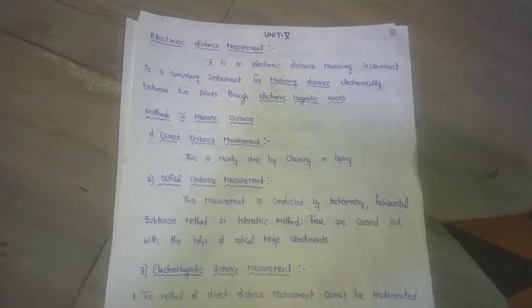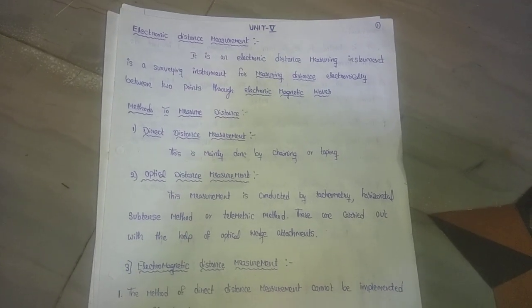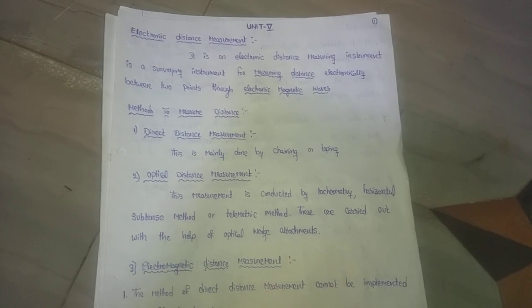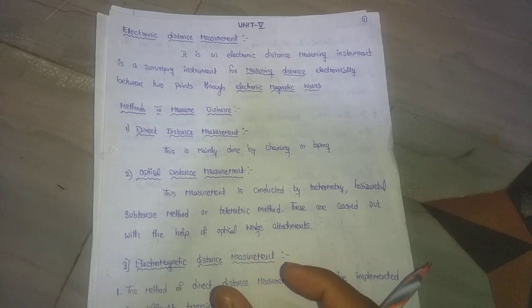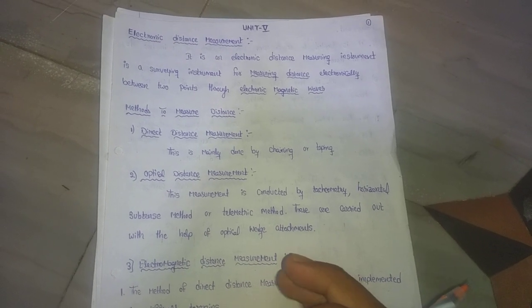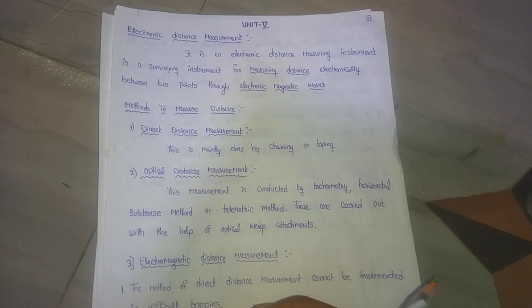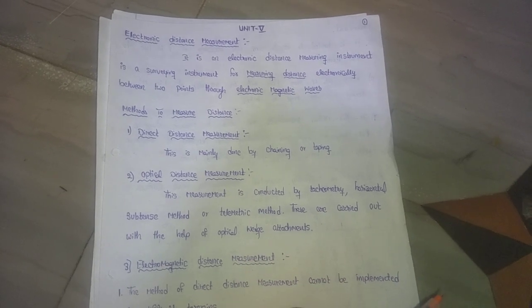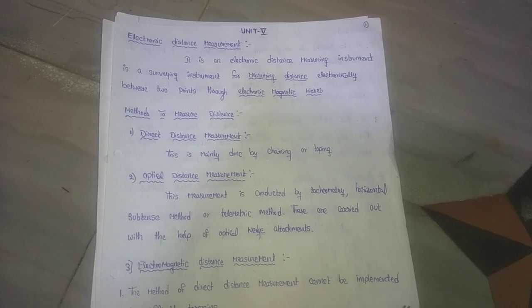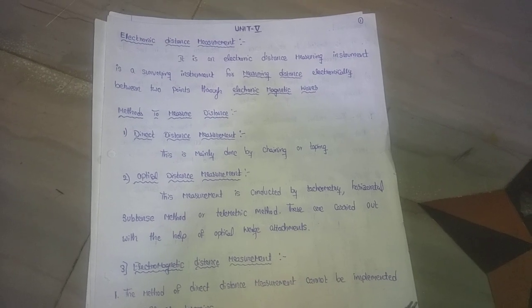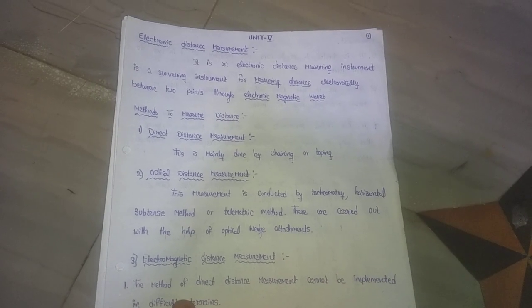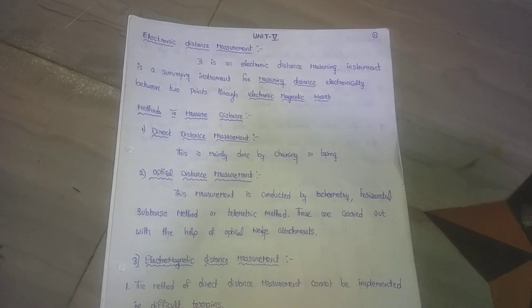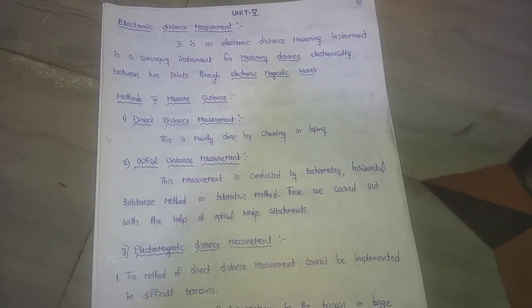In direct distance measurement, we are directly measuring distances between two points using a chain or tape. However, not all site conditions allow the use of chain and tape - only some sight conditions make it possible to measure the distance between two points this way. It is also a time-consuming process.